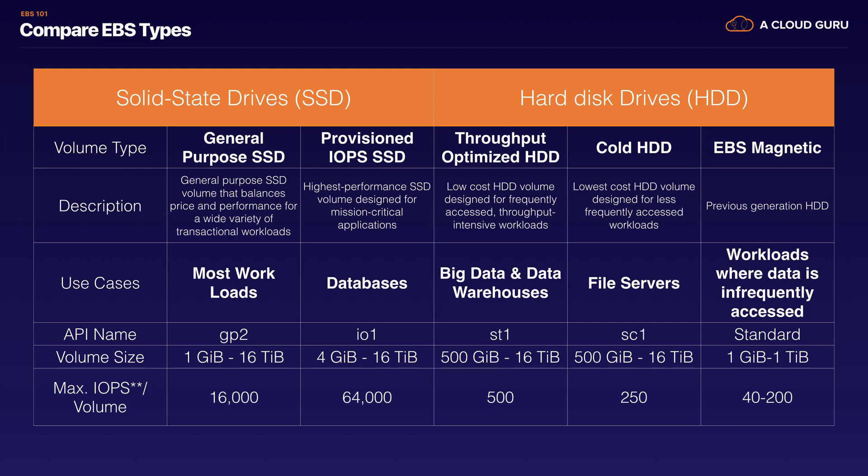If you start going above 16,000 IOPS, you're going to need to go over to provisioned IOPS. Provisioned IOPS SSD is the highest performance SSD volume and it's designed for mission critical applications. Your workloads here will be databases, and provisioned IOPS SSD is capable of going up to 64,000 IOPS per volume.